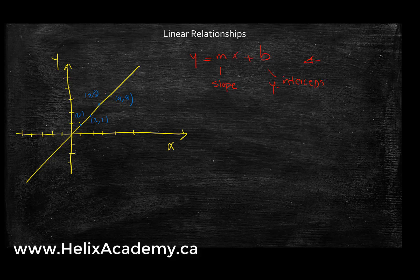If they're all equal, that means my equation is y equals x. So if all of my x and y values are equal, this is a linear relationship between these points. This is a map of all the points that are on this line.